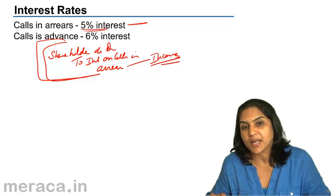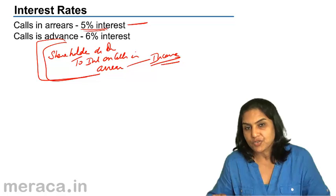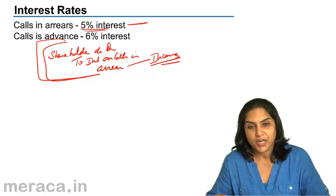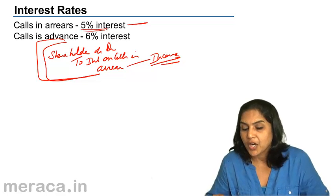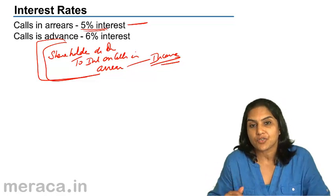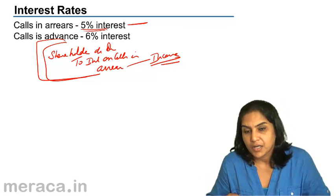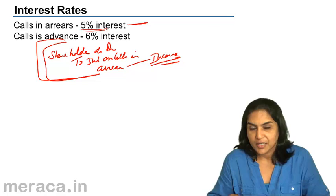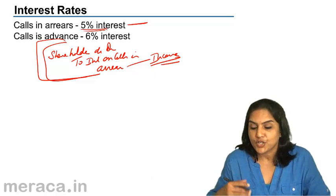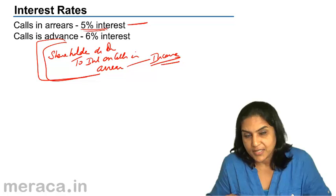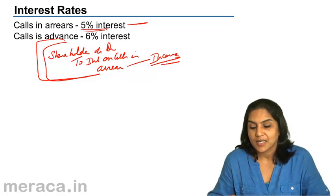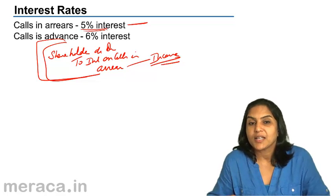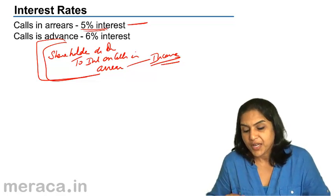According to Table A, the maximum rate of interest for calls in arrears is 5% and for calls in advance it is 6%. A call in advance is when money is received before the call is made. In such a case, the company has to pay the interest, and a rate of 6% is what is mentioned in Table A of the Companies Act.